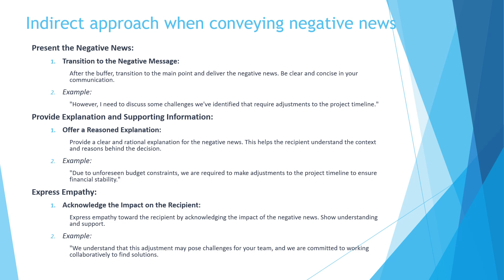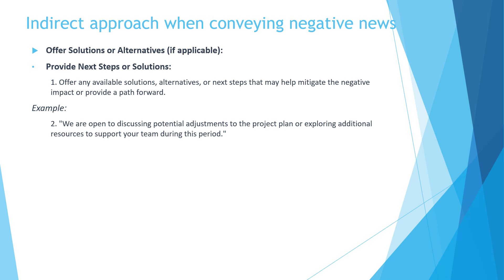The fourth step is expressing empathy — show understanding and support regarding how the news might affect them. For example: 'We understand that the adjustment may pose challenges for your team and we are committed to working collaboratively to find solutions.' Expressing empathy reassures the recipient that their feelings and challenges are acknowledged, making it easier for them to accept the news. The last step is offering solutions or alternatives — suggest possible solutions or alternatives to help mitigate the negative impact and empower the recipient to engage in problem solving, reducing feelings of helplessness.